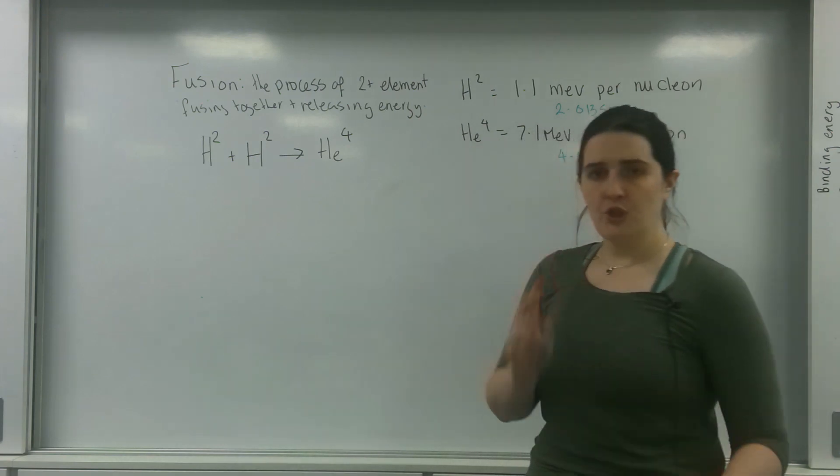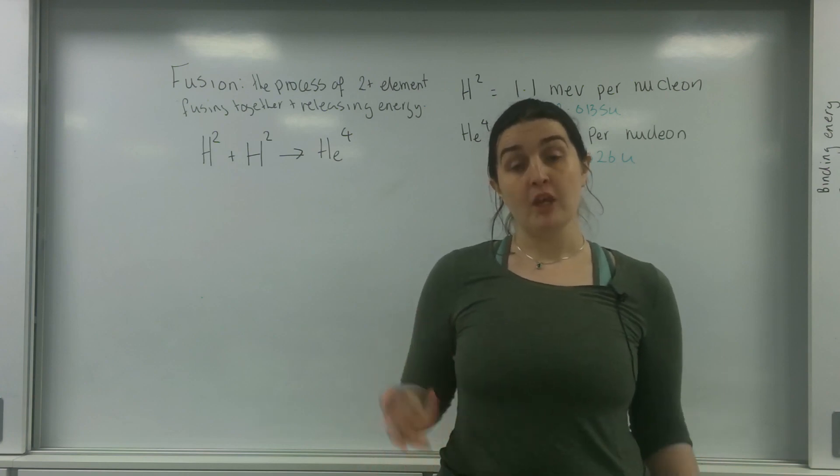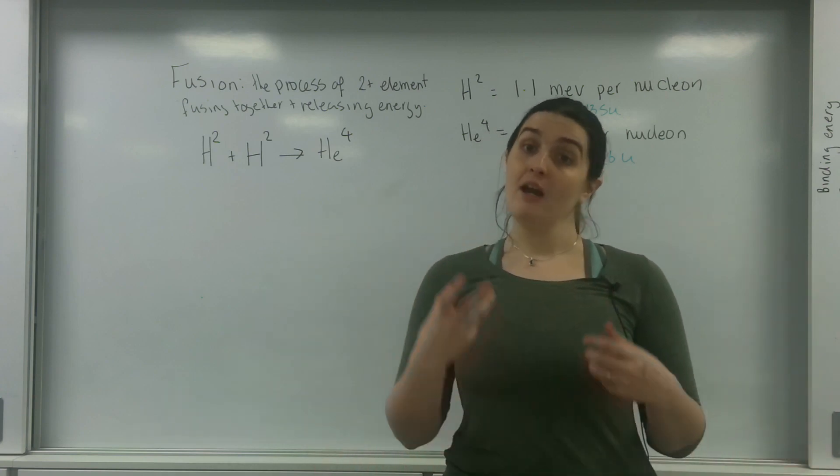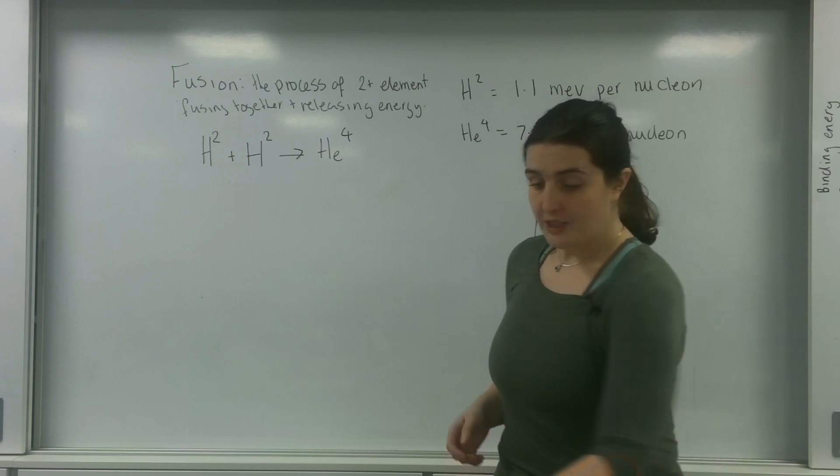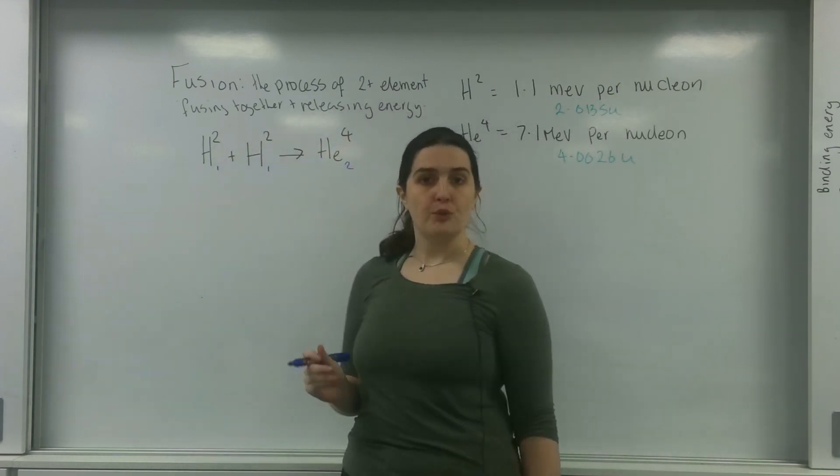So what I have here is I've got two isotopes of hydrogen known as deuterium fusing together to make helium-4. As you can see everything's balanced - twos, fours and of course helium is two there.